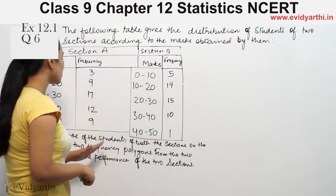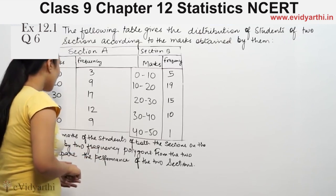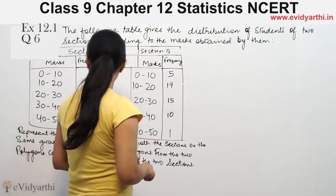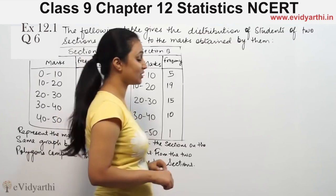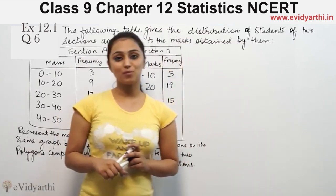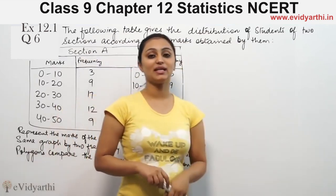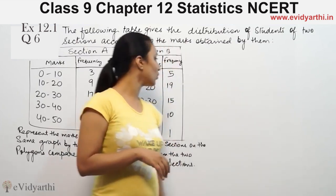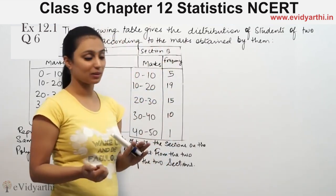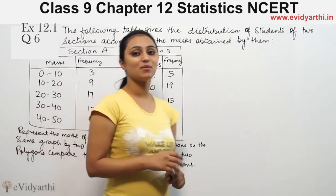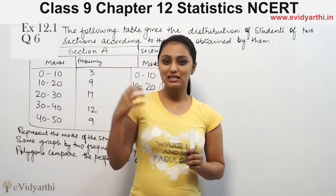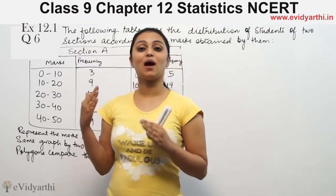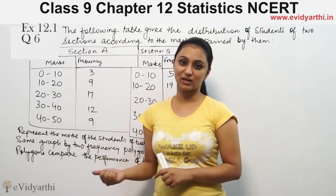We need to represent the marks of the students of both sections on the same graph by two frequency polygons. From the polygons, we can compare the performance of the two sections.